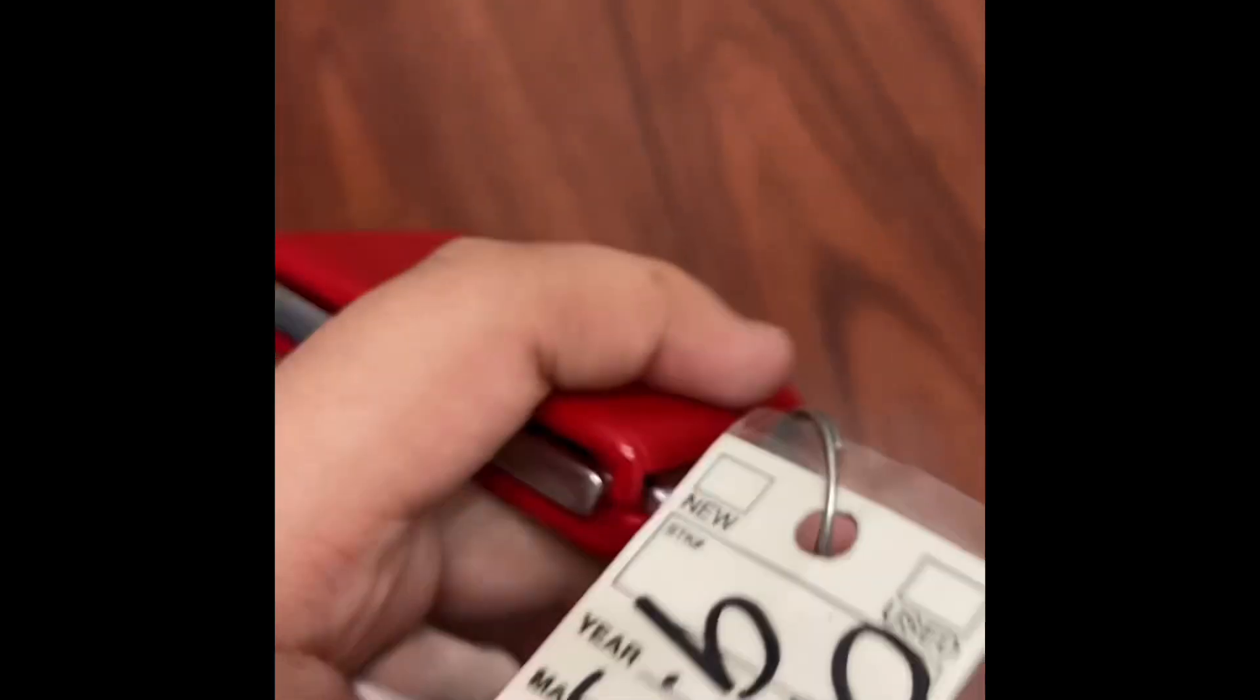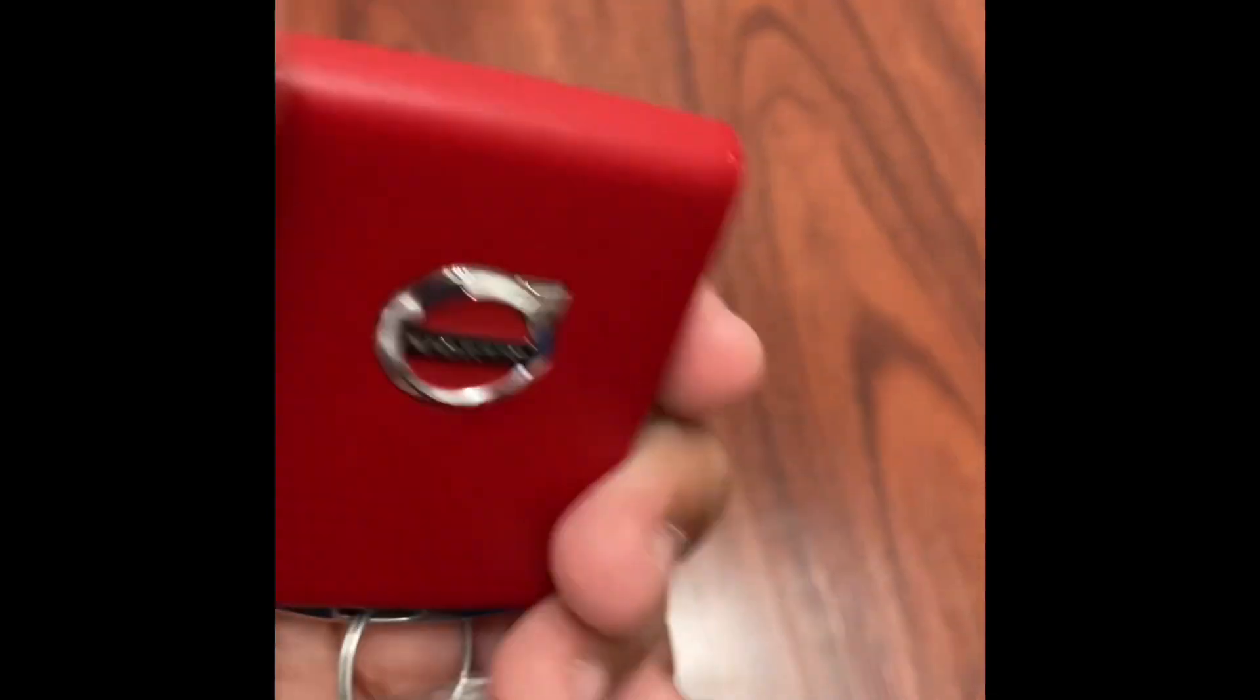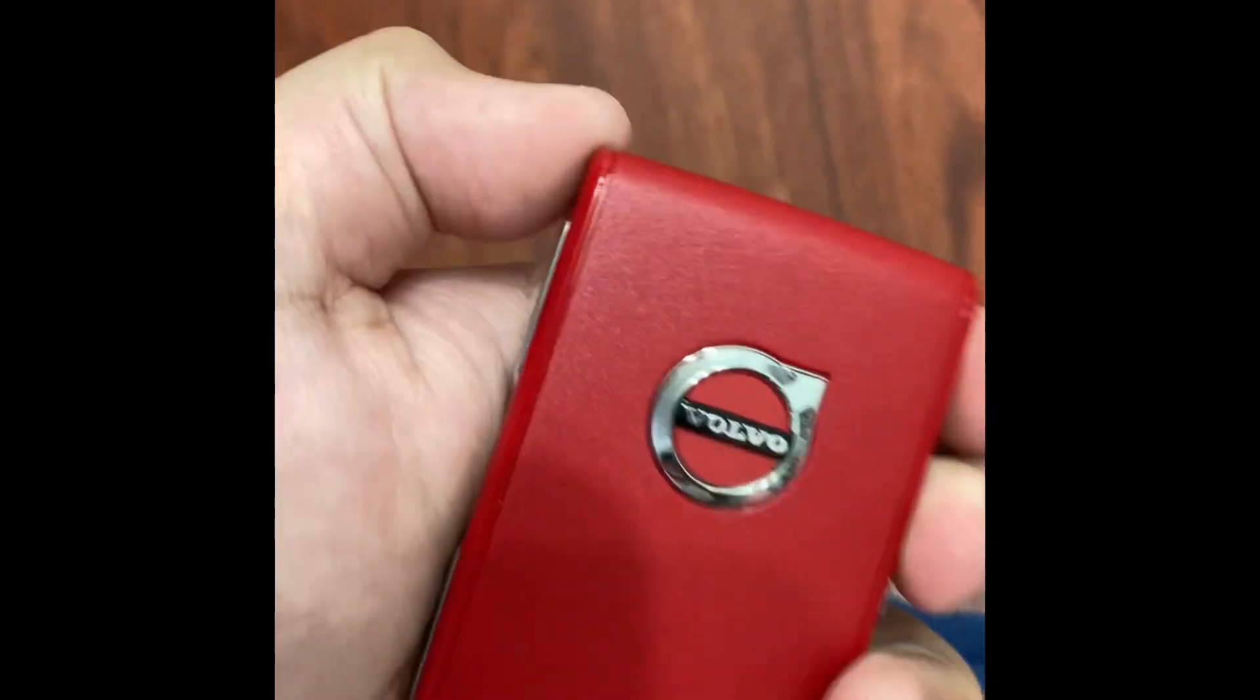So what you do is you pull on this, then you push on the key with your thumb. There it is. And you just pull it out like that, and there's your key.